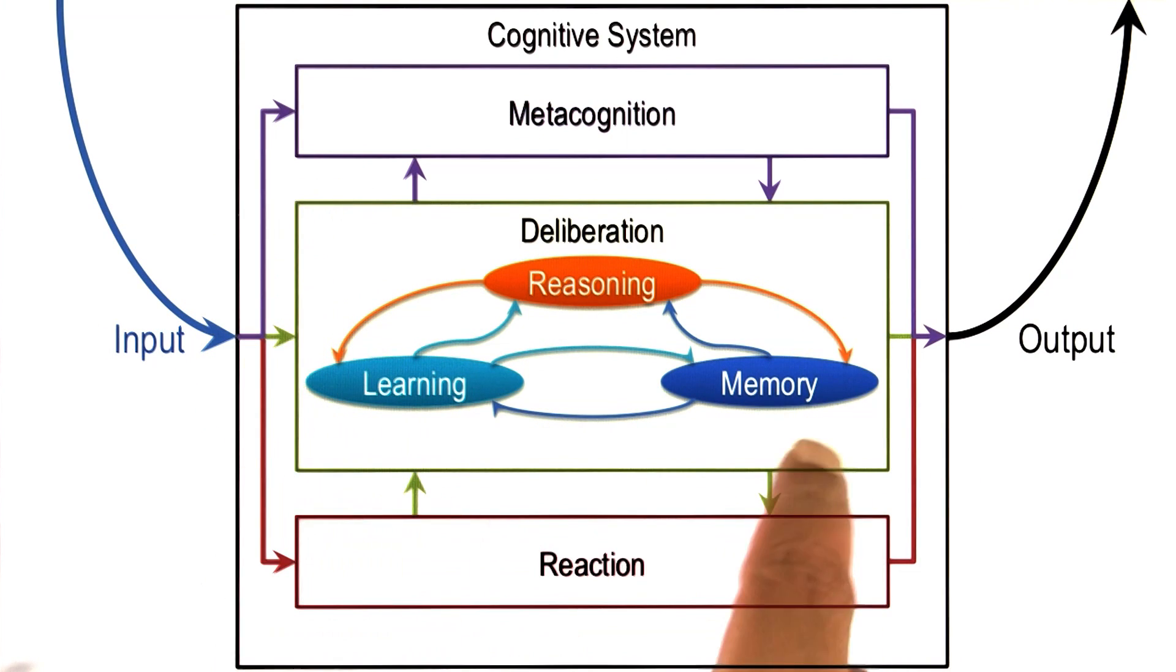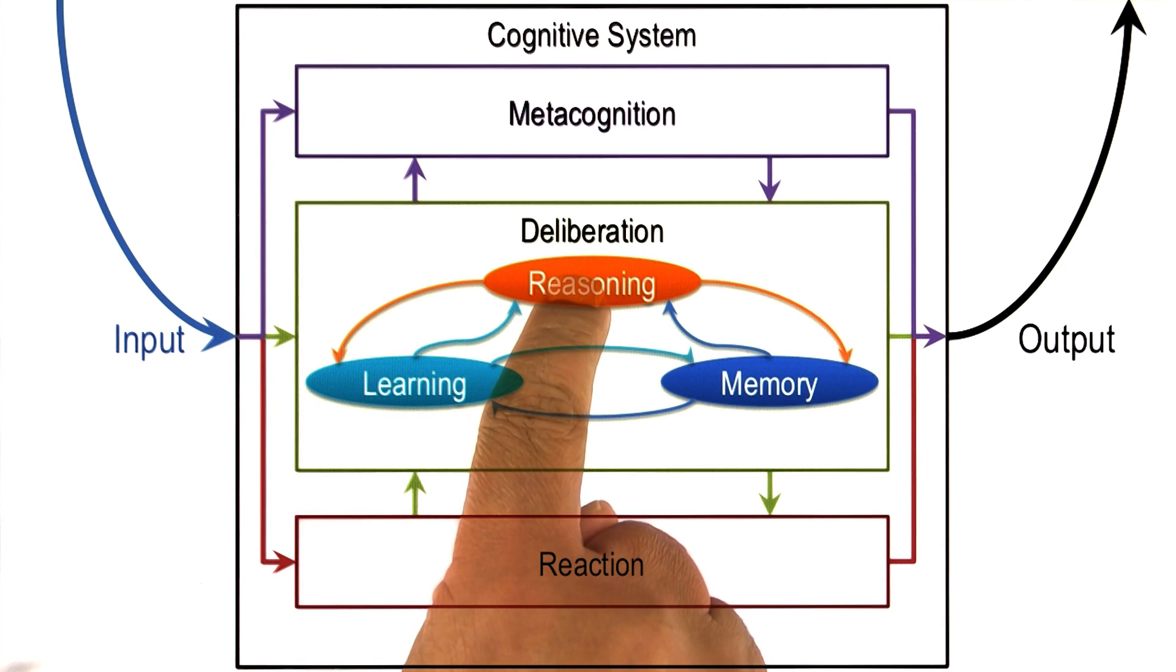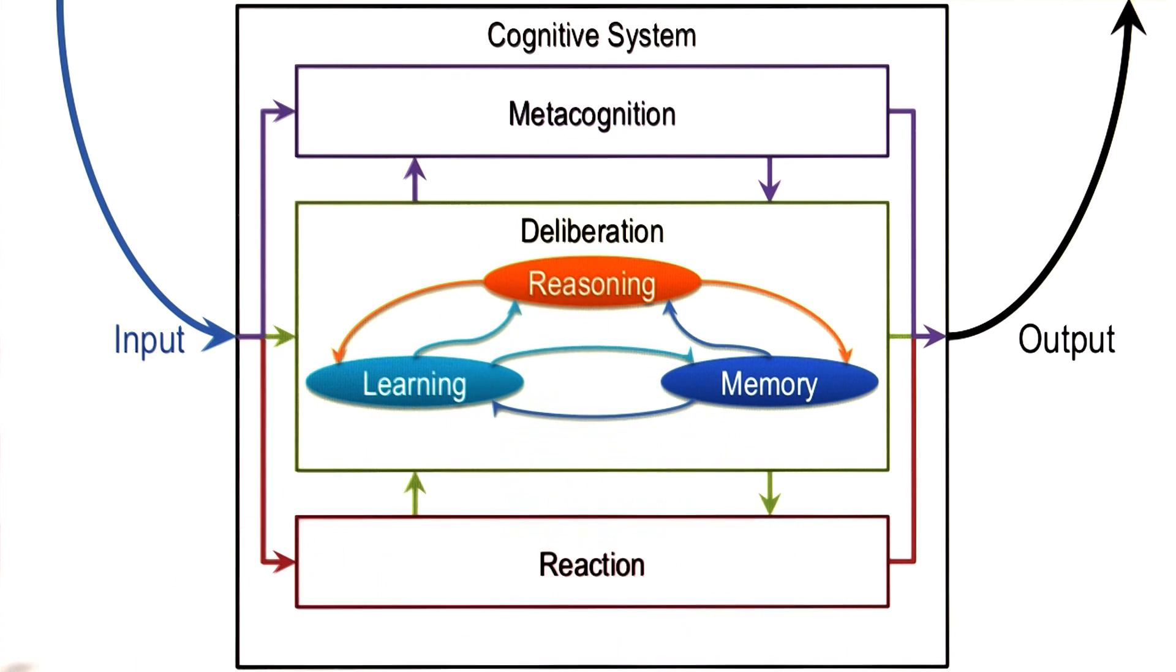Notice also, there's reasoning, learning, and memory here in the deliberation module are closely connected to the metacognition module. Here the reasoning, memory, and learning may be about action selection on the world.